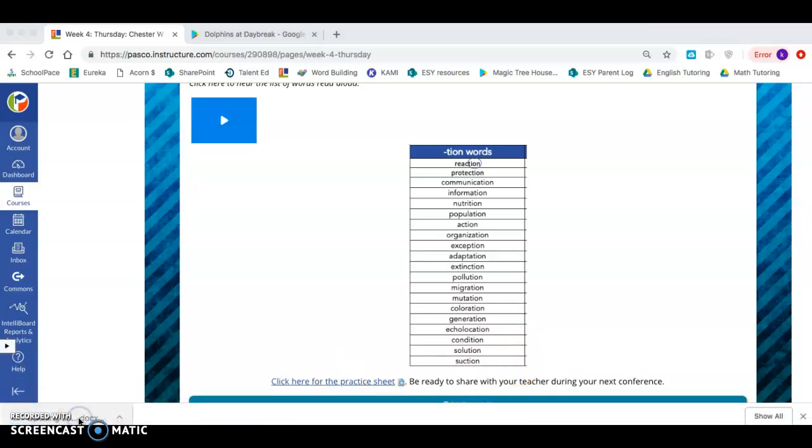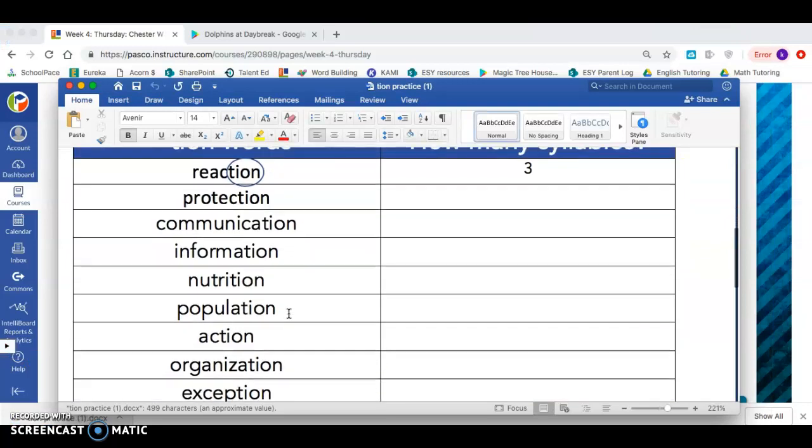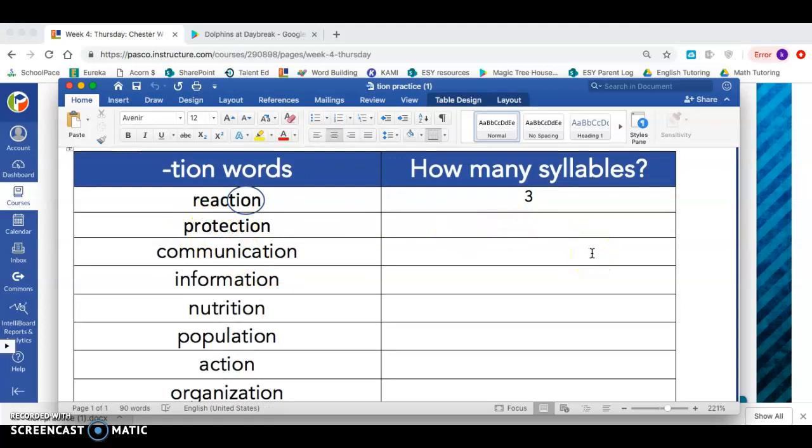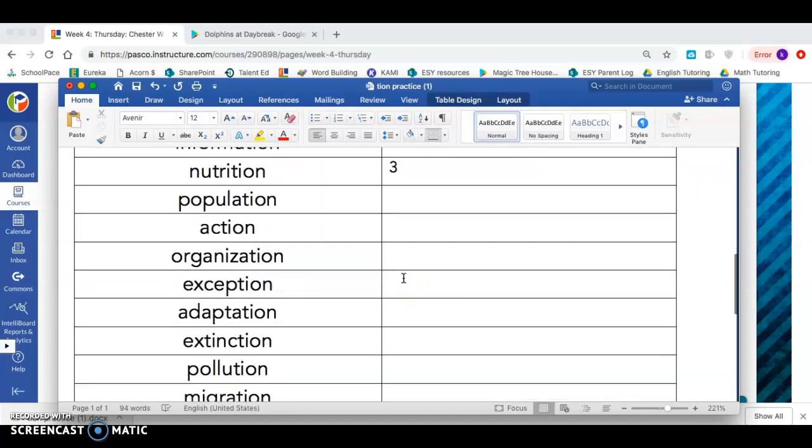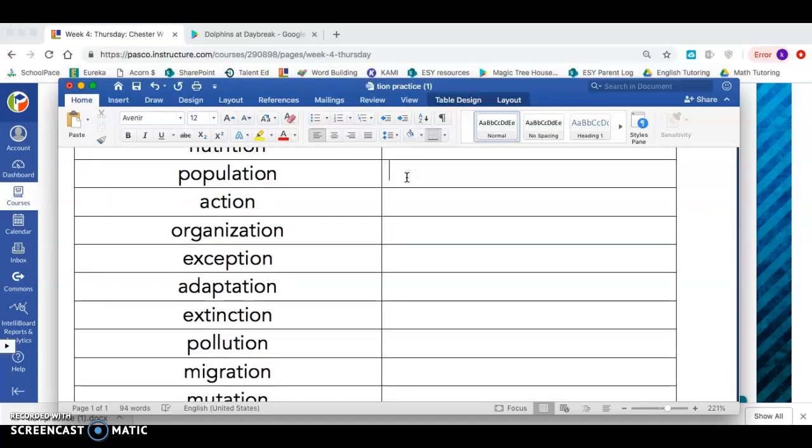Now we're going to practice finding out how many syllables each of these have. Let's look at the first word. Protection has three syllables. Communication has five. Information, I clap four times. Nutrition, there's three syllables because I clap three times. Population, I clap four times, so there's four syllables. Action, I clap two times, so there's two syllables.